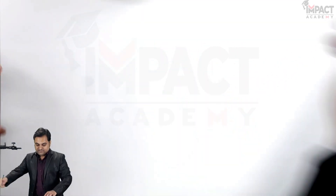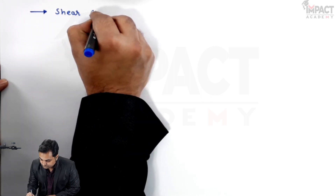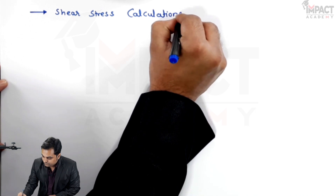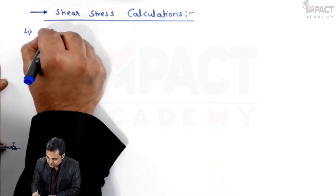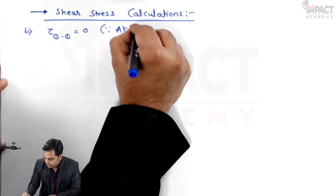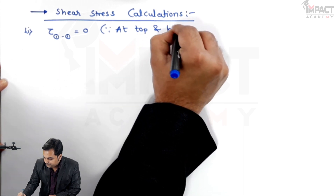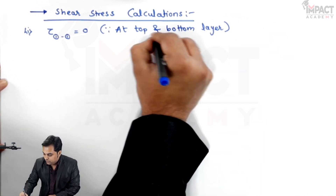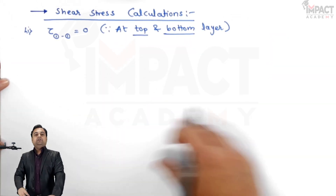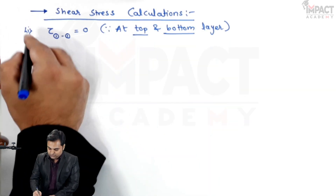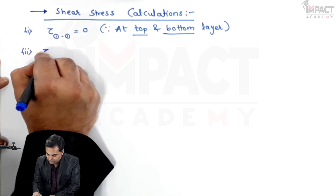Shear stress tau at section 1 is zero, because it is the top and bottom layer. For the derivation of why shear stress is zero at the outermost layer you can refer to my video explaining the derivation of shear stress for a rectangular section. Next, for section 2, the shear stress formula is used.